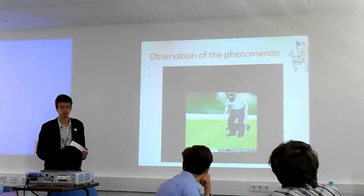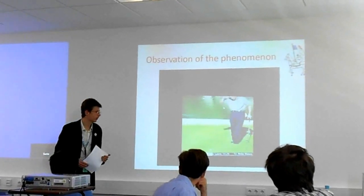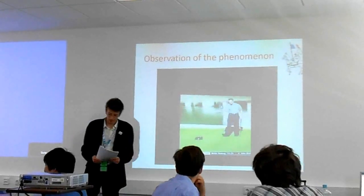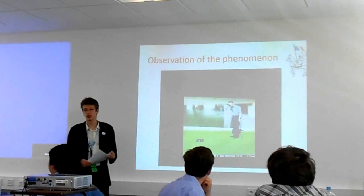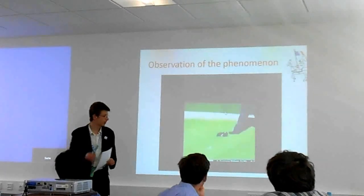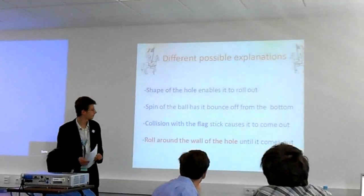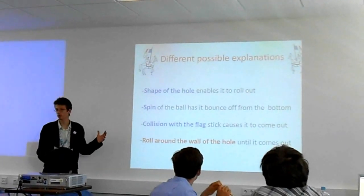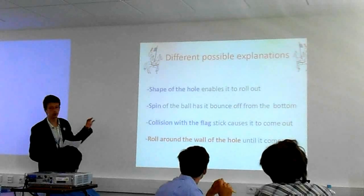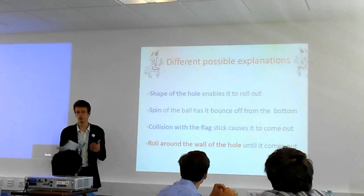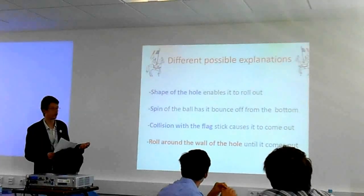He's hitting the golf ball and it comes out. Of course, he's not quite happy. There are different explanations possible for this to happen. The shape of the hole can be wrong, but we aren't going to study this because it depends wholly on the shape of the hole, which is not really a parameter.